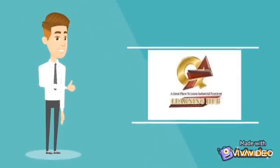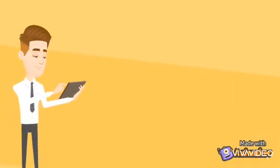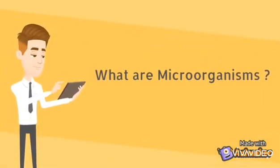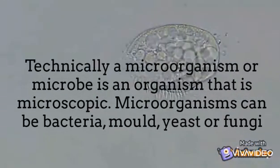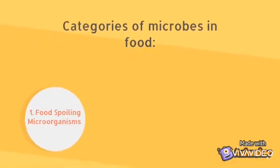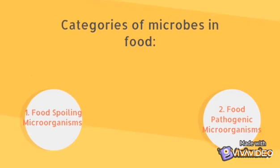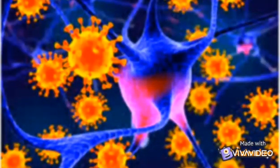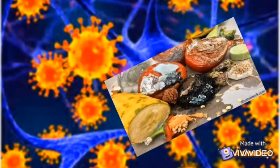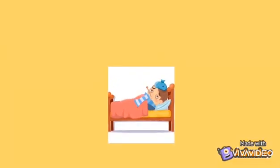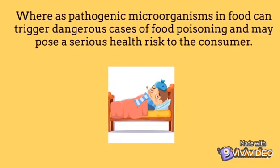Before we jump into the details of Salmonella, let's quickly tune up the basics of food microbiology. Technically, a microorganism is an organism that is microscopic. Microorganisms can be bacteria, mold, yeast, or fungi. There are two categories of microorganisms in food: food spoiling microorganisms and food pathogenic microorganisms. Food spoiling microorganisms are either bacteria or fungi — too small to be seen — that cause food to deteriorate and develop unpleasant odors, tastes, and textures. Pathogenic microorganisms in food can trigger dangerous cases of food poisoning and may pose a serious health risk to the consumer.